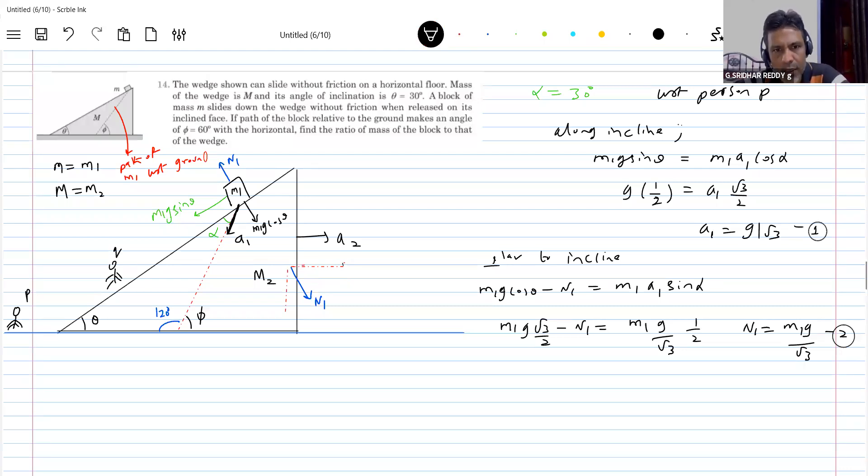If I resolve the force, how much I'll get here in this direction? N1 sine theta. What is N1 sine theta should be equal to? M2 A2. Do we know N1 value? Yes. M1 G by root 3. What is sin theta? 1 by 2 equal to M2 A2. So here finally, M1 by M2 is equal to 2 root 3 A2 by G. Now the equation 3, you write it.